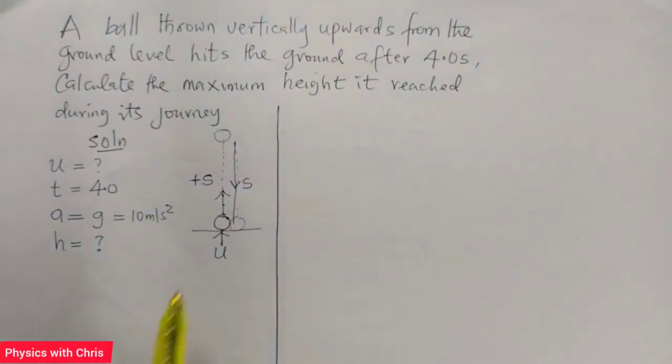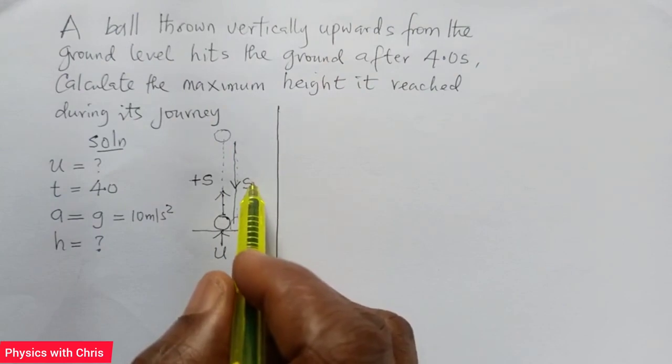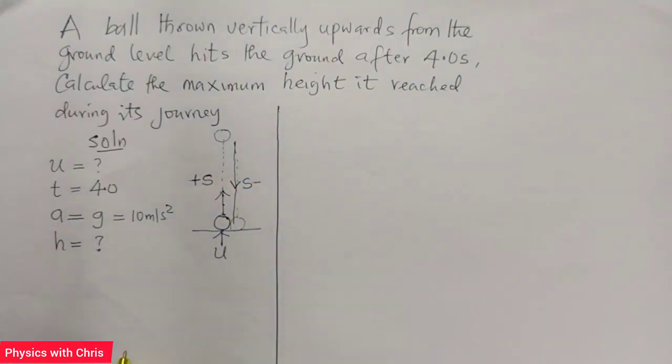So that the total displacement of the ball when it is back to the ground is equal to the upward displacement plus S minus the downward displacement minus S, which gives us zero. And that happens in four seconds. This displacement is zero when the time t is equal to four seconds.